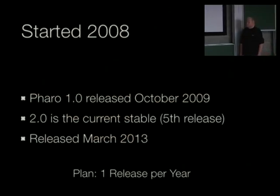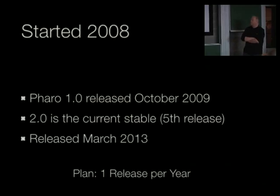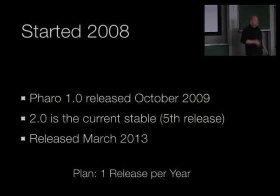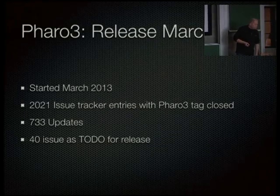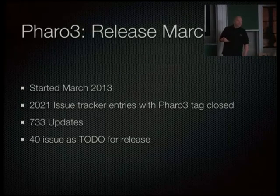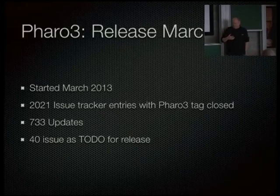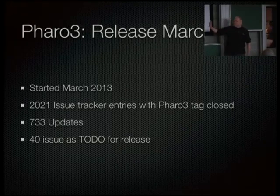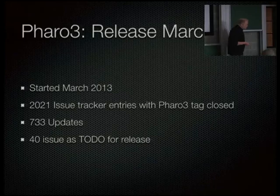Pharo was started in 2008, but we had our first release only relatively late in 2009 in October. Since then we've had all in all five releases. 2.0 is the stable release, released last March. Last year's talk here at FOSDEM was about what we had done for Pharo 2. The idea is to do one release per year for the next 20 years or something like that. We started Pharo 3 development in March 2013.